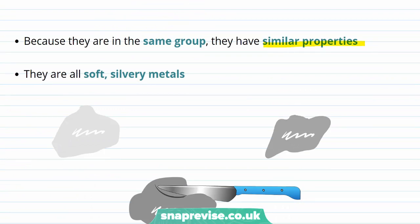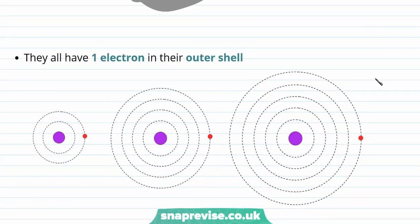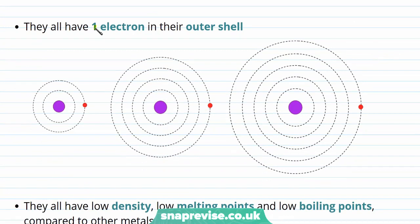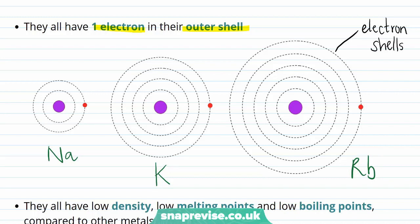They're all metals and they're all shiny and soft enough to be cut with a knife. The reason for their similar chemical properties is because they all have the same outer shell electronic structure — that is, they all have one electron in their outer shell. These diagrams indicate the outer shell electronic structure for sodium (chemical symbol Na), potassium (chemical symbol K), and rubidium (chemical symbol Rb). The dotted black lines show electron shells, and the outer shell electrons are shown in red. You can see that sodium, potassium and rubidium all have one electron in their outer shell, confirming that they're all Group 1 metals.